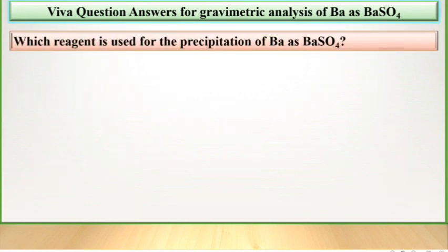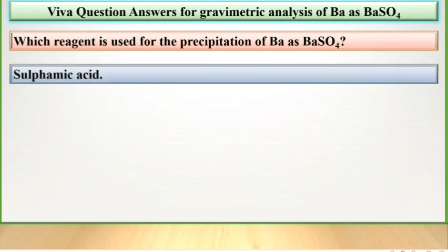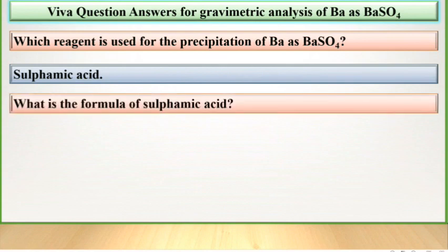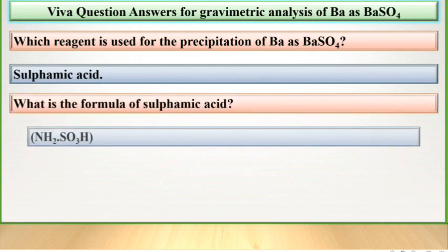Which reagent is used for the precipitation of BA as BaSO4? Sulphamic acid. What is the formula of sulphamic acid? NH2SO3H.